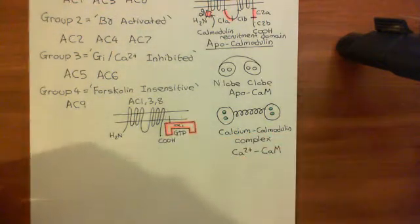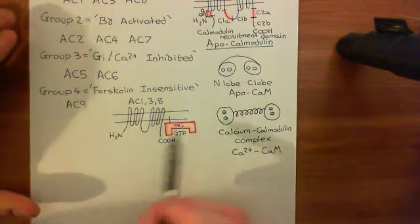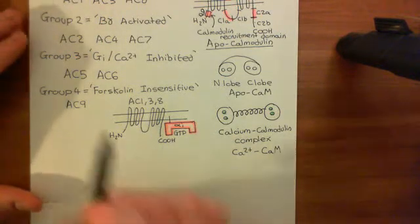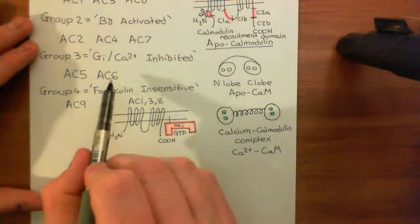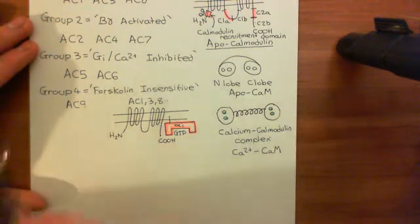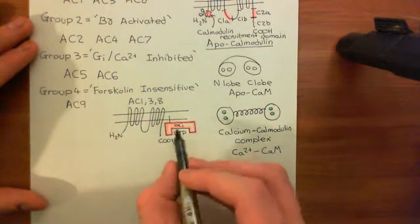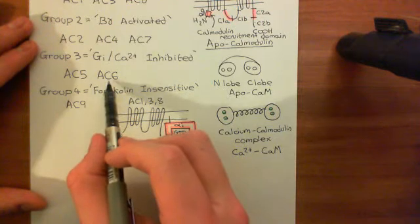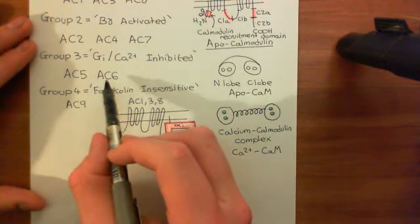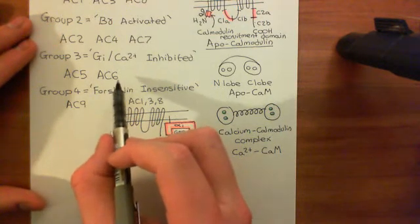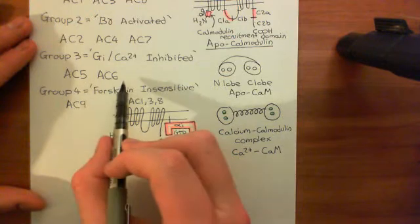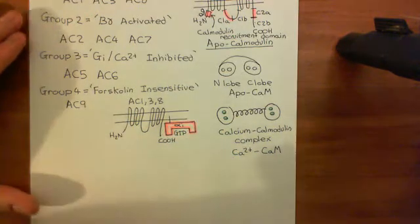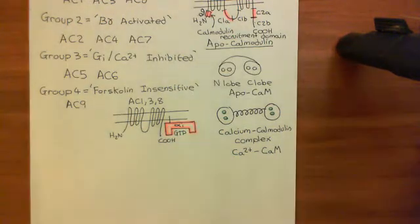The G-alpha-I GTP complex also has effects on adenylyl cyclase 5 and adenylyl cyclase 6, and in this case it's more simple. The alpha-I GTP subunit will bind to adenylyl cyclase 5 and adenylyl cyclase 6 and will directly inhibit the enzyme — reducing its ability to produce cyclic AMP from ATP.